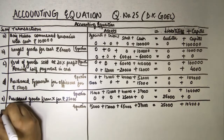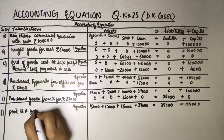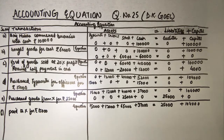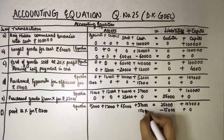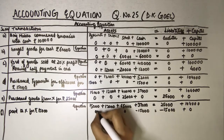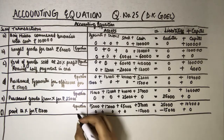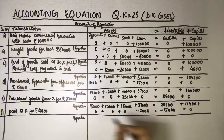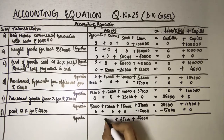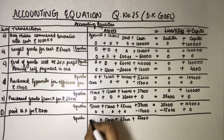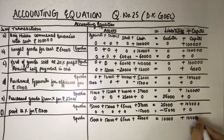Part F: paid to X Rs. 15,000. We had taken goods on credit from X for 25,000, now paid him 15,000. So X's balance reduces and cash also reduces by 15,000 — effect on both sides. Equation: 22,000 cash plus 65,000 stock plus 12,000 debtors plus 15,000 typewriter equals 10,000 creditors plus 1,04,000 capital.